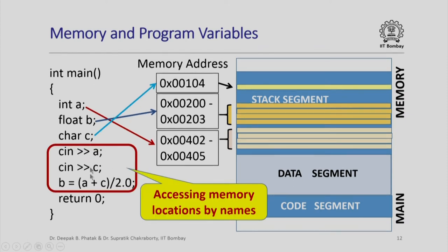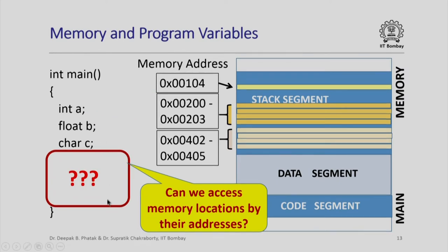If we look at some real C++ code using these variables, we are accessing memory locations by their names — read a value and store it in the locations corresponding to variable A, read a value and store it in locations corresponding to C, compute the average of A and C and store it in B. All accesses are by names of the corresponding variables. One might ask: can we access memory locations not by name but by their addresses? This is the primary motivation for us to study pointers in C++.